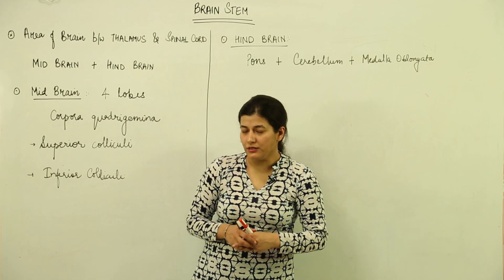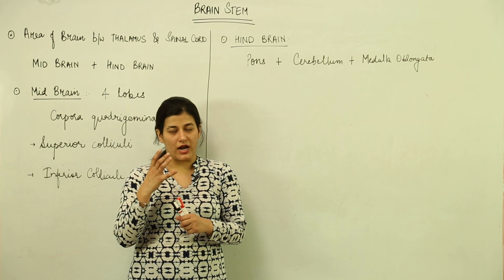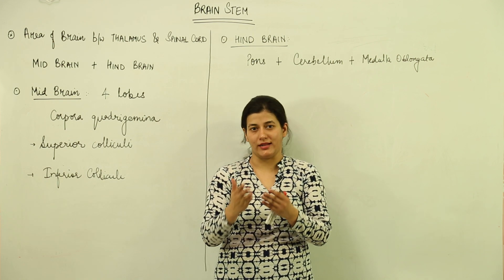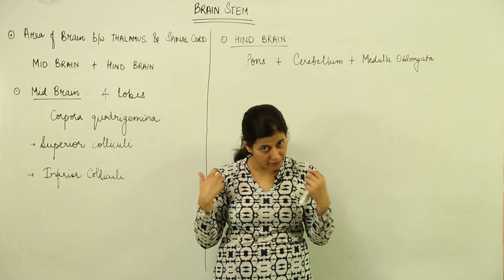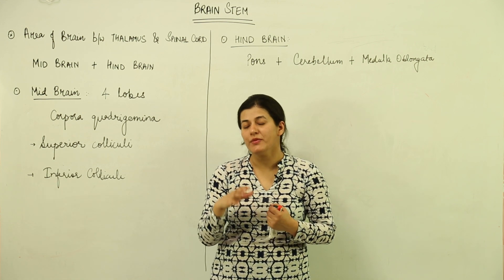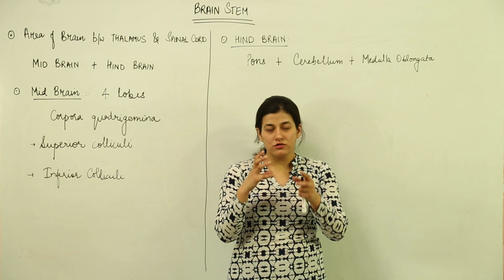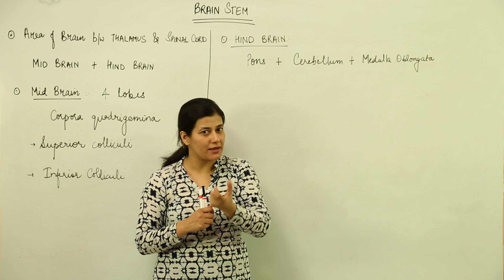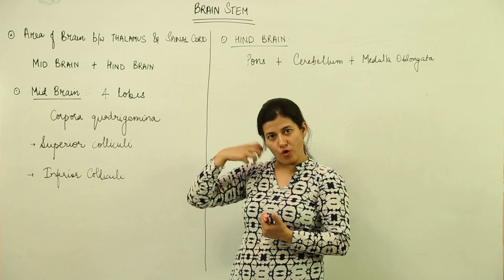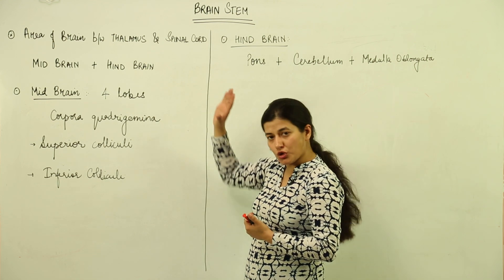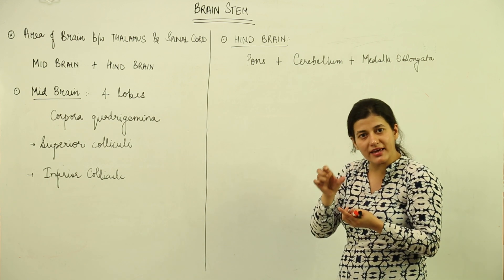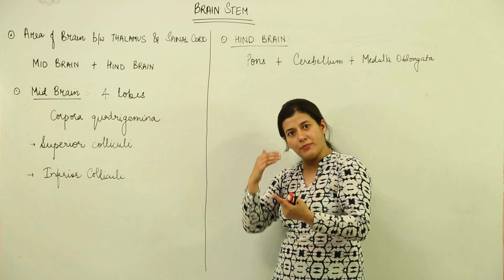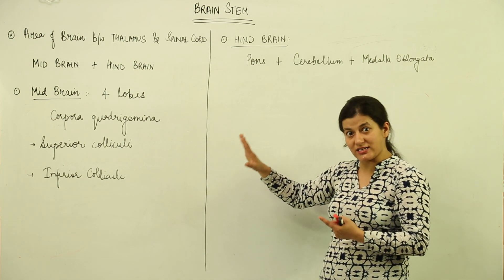We are going to talk about another part of the brain — the brain stem. This is not an actual division of the brain but a term used for understanding purposes. The brain stem has nothing to do with the forebrain; the cerebrum and its lobes form the forebrain. The brain stem is a slender, branch-like structure that connects the forebrain with the hindbrain through the midbrain — just as a plant stem connects roots and leaves.